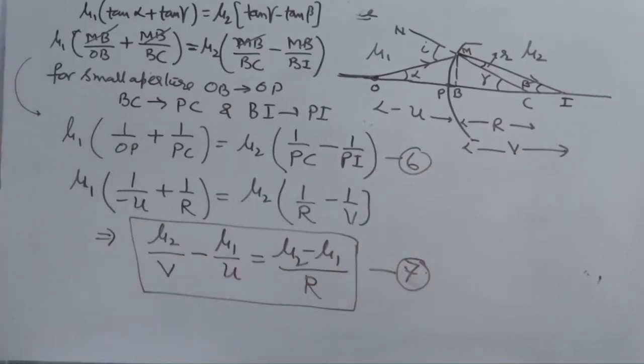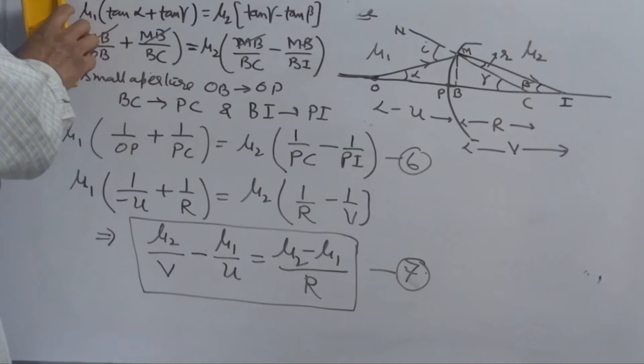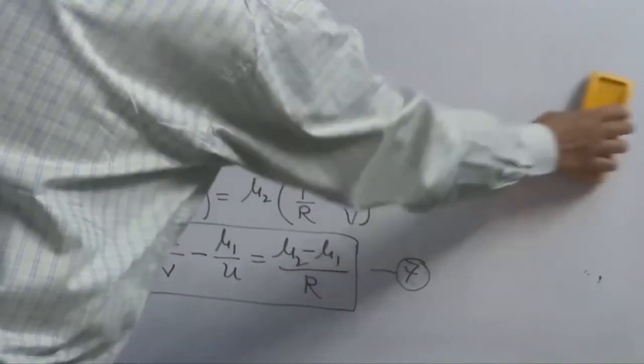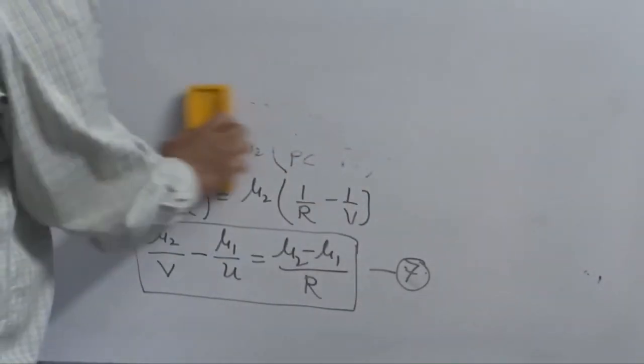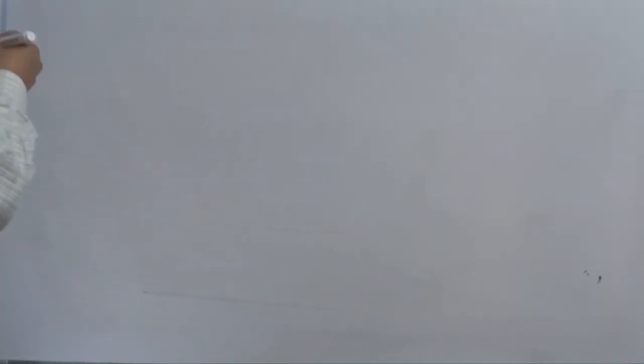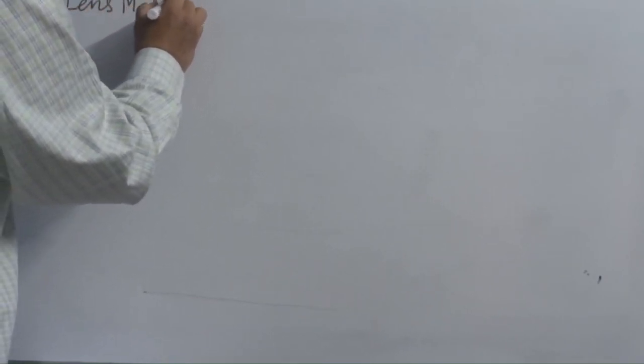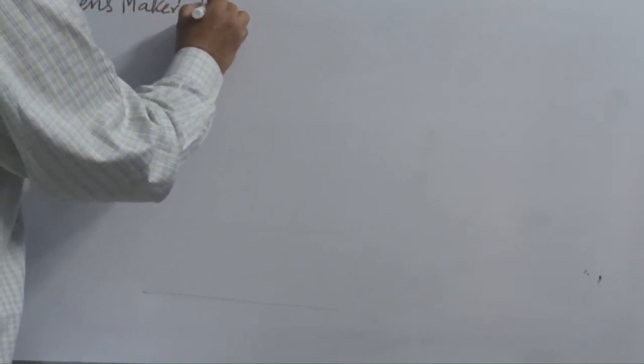For finding a relation, give a relation between U, V and R. Lens Makers Formula. Now, in the next article, we are going to do Lens Makers Formula. What is the difference between Lens Makers Formula and Lens Formula? Lens Makers Formula is used to design thin lenses. That's why it is termed as Lens Makers Formula.